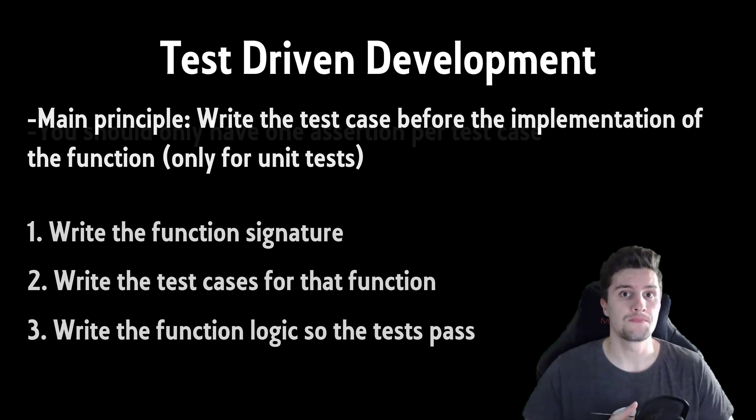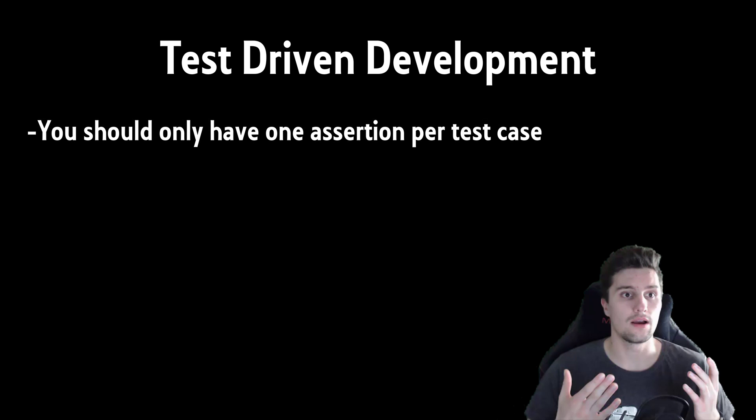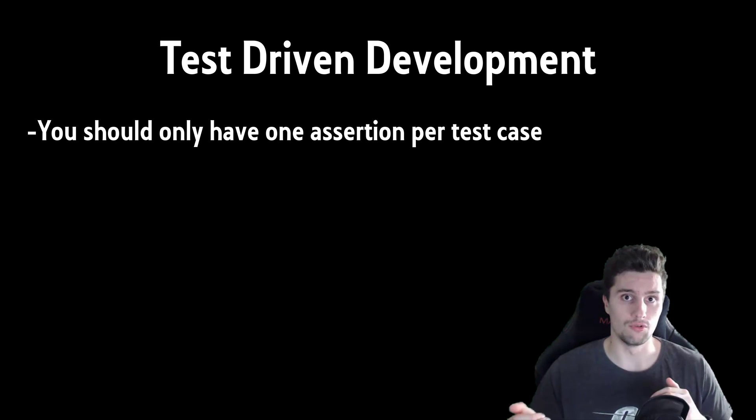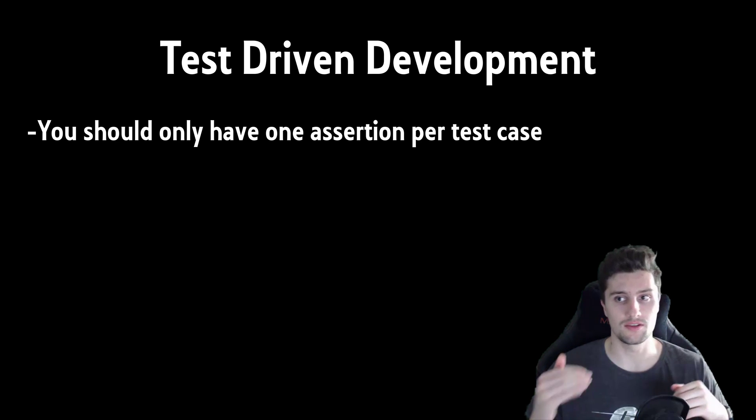Another big principle of test driven development is that you should only have a single assertion per test. If you don't know what an assertion is, that is basically the actual test. With an assertion, we make sure that our test either succeeds or does not succeed. An assertion could be: at this point in our test case, this condition must be true. If it's not true, the test case will fail. We could also have several assertions in our test case, so for example this object should be null, this object shouldn't be null, and this object shouldn't be null too.